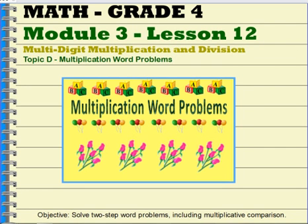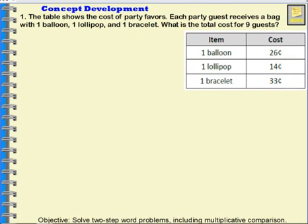Problem one: the table shows the cost of party favors. Each party guest receives a bag with one balloon, one lollipop, and one bracelet. What is the total cost for nine guests? In this party bag there's one balloon, one lollipop, and one bracelet.